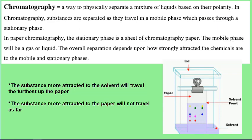Chromatography is another physical way to separate a mixture of liquids, but this one is based on polarities. Substances are separated as they travel in a mobile phase, which passes through a stationary phase. In paper chromatography, the stationary phase is a piece of chromatography paper. The mobile phase will either be liquid or gas — most of the time it's a liquid, so our solvent is our mobile phase. The separation depends on how strongly attracted the chemicals are to either the mobile phase (solvent) or the stationary phase (paper).